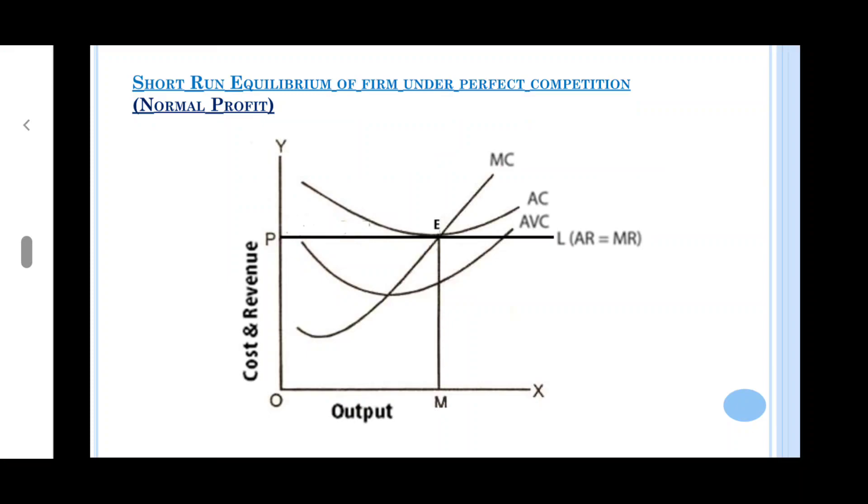Look at the figure. X-axis shows the level of output, Y-axis shows cost, revenue and price. For equilibrium condition, the first requirement is marginal cost is equal to marginal revenue. Marginal cost curve must cut the MR curve from below and after cutting it must rise. And AR is equal to or greater than AVC.